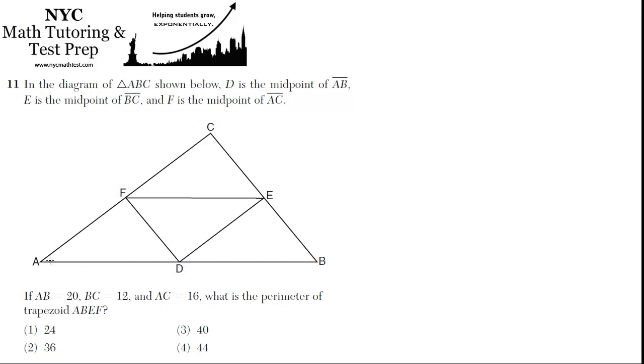If AB is 20, this whole length is 20, and D is the midpoint, then this must be 10, and this must be 10.